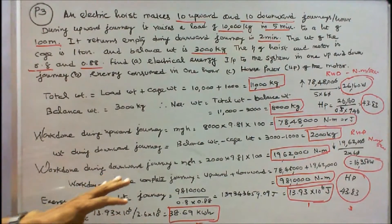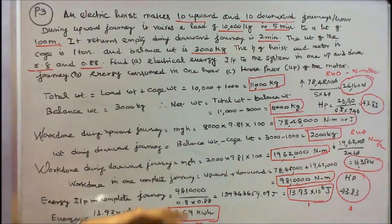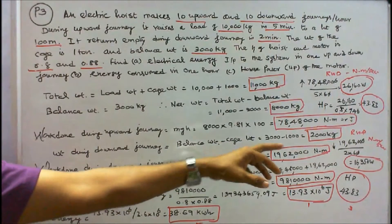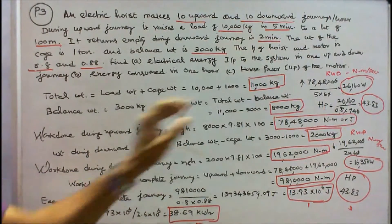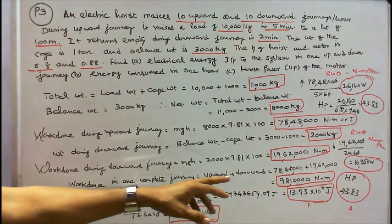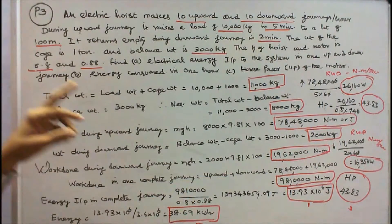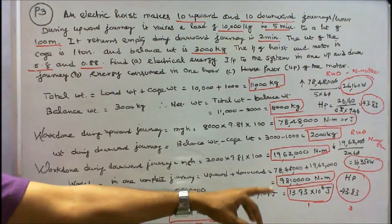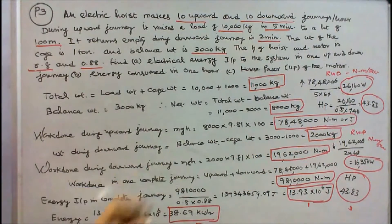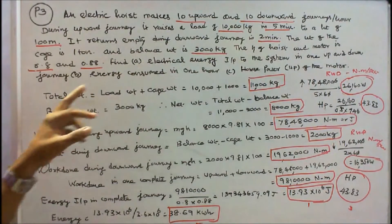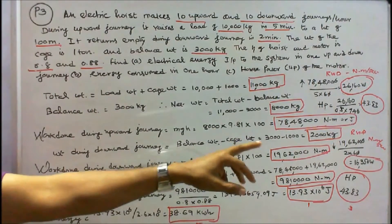Work done in one complete journey is equal to upward plus downward: 78,48,000 plus 19,62,000, that is equal to 98,10,000 Nm. Energy input in complete journey is equal to 98,10,000 divided by hoist efficiency 0.8 and motor efficiency 0.88, that is equal to 13.93 into 10 power 6 joules. Therefore, electrical energy input to the system in one up and downward journey is 13.93 into 10 power 6 joules.